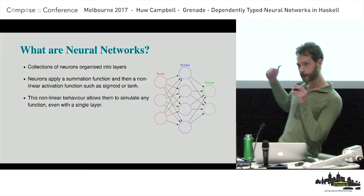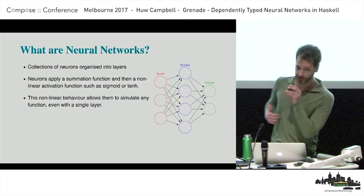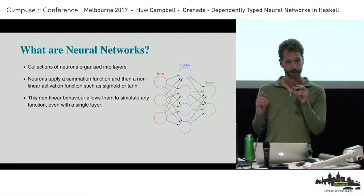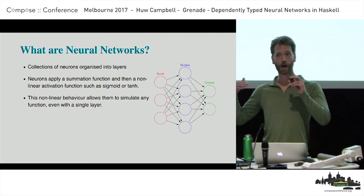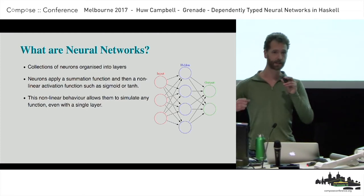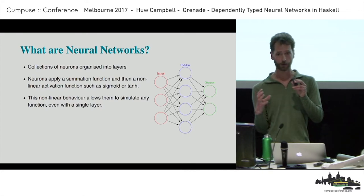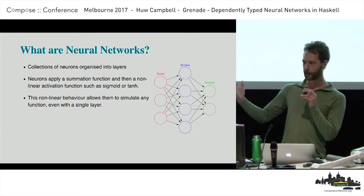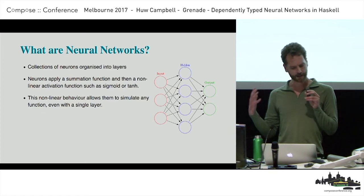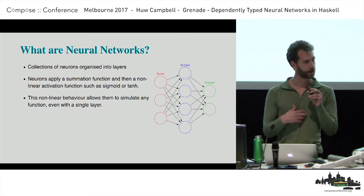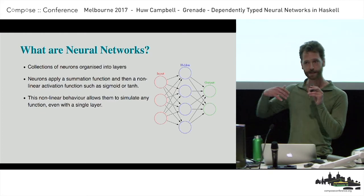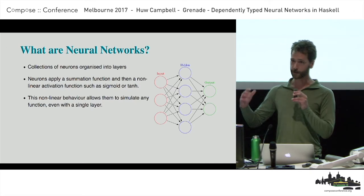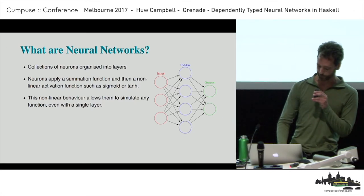Has everyone seen a diagram like this before? Each of these little circles is a neuron, and each of the lines between them are weights between the neurons. Each neuron forms a summation function and then applies a non-linear transformation. It's these non-linear transformations that allow us to express any function. Neural networks approximate functions and learn to approximate functions.